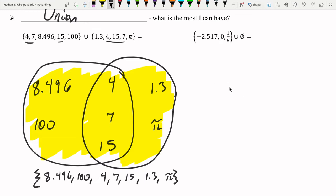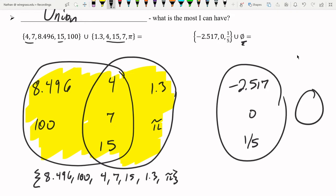For this next one we have the set negative 2.517, 0, and 1 fifth. And then we have the empty set. The empty set is just a set with no elements. So I'm just going to create a circle with nothing on the inside of it.